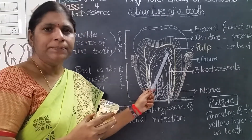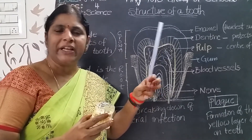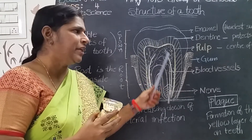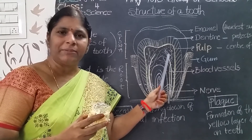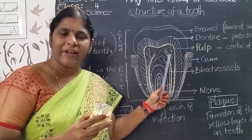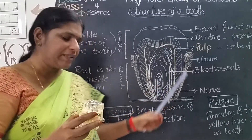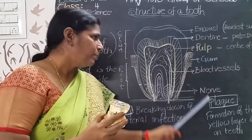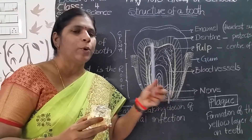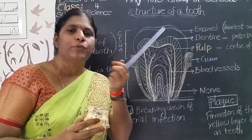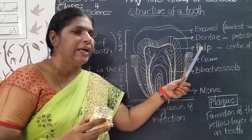The center of the tooth is called pulp. It is very soft and has blood vessels and nerves in it. Blood vessels carry the blood; nerves carry the messages. Our teeth get nourishment through the pulp only. These are all the three layers of the tooth: enamel, dentine, and pulp.